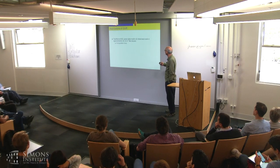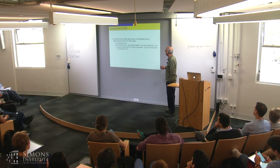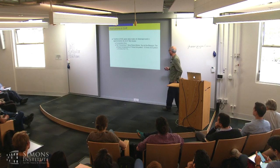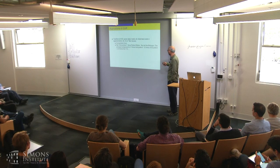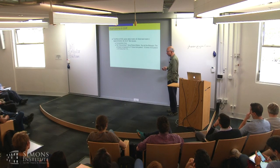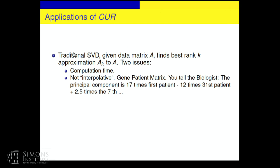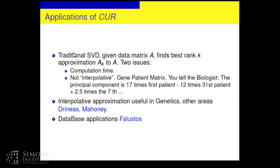So traditional SVD given data matrix finds the best rank K, two issues, computation time. This was referred to. So some of the application, one of the applications is to the health sciences. You have a gene patient matrix. If you did SVD, you can go back and tell the biologist, the principal component is 17 times the first patient minus 12 times the 31st patient and so on and so forth. Now, biologists don't like making multiple copies of a patient, and they certainly don't like subtracting patients because this is a bad thing to do. But interpolative approximation here, what CUR does, it tells you here are some patients, you can tell the biologist, here are some patients and here are some genes that with these, you can represent the whole thing. Actual patients and actual genes. That this was worked by this application. The applications and databases by and others. There are a bunch of other applications of CUR, but I didn't put them all up. But here are a couple of representative ones.